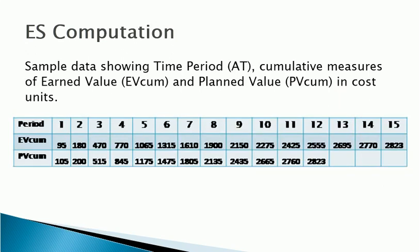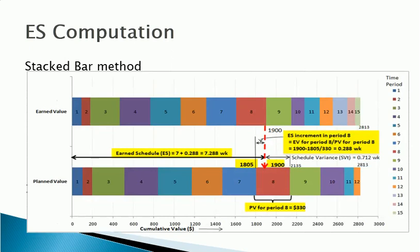To understand how to calculate Earned Schedule, let's look at the sample data shown in the table. As discussed before, Earned Schedule can be computed graphically by projecting EV at the status period onto the PV curve and then taking the X-intercept of this projection. The actual ES computation formula uses linear interpolation, so to make the graphical process more intuitive and accurate, we can plot the EV and PV data on a stacked bar diagram.